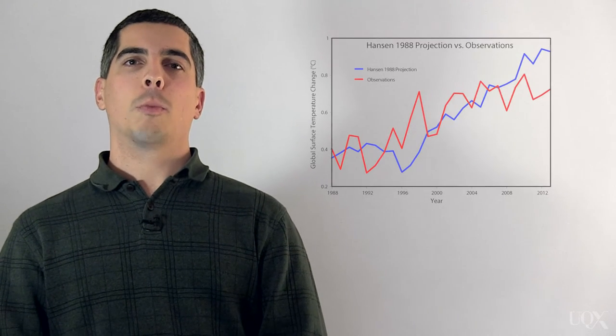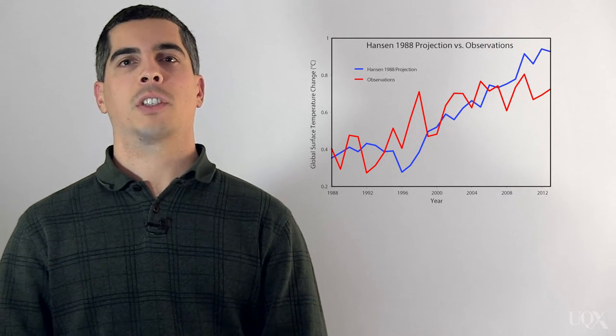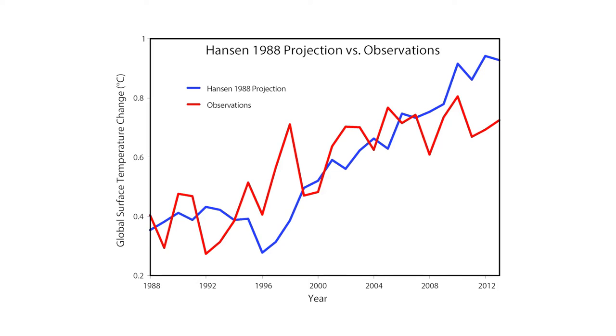Hansen made another global warming projection in 1988 using a newer version of his climate model. However, this newer model was more sensitive to the increased greenhouse effect than his 1981 model, and more sensitive than most of today's global climate models.